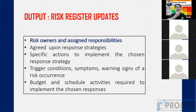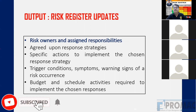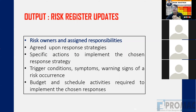All agreed-upon responses are recorded, along with the risk response owner for each risk — for example, a procurement-related risk is owned by the procurement department; a contractual risk may be owned by the subcontractor. Trigger conditions, warning signs and symptoms of risk occurrence are also recorded. Budget and schedule impacts are recorded — how much the risk will affect the cost baseline and schedule baseline — all updated in the risk register after risk response planning.